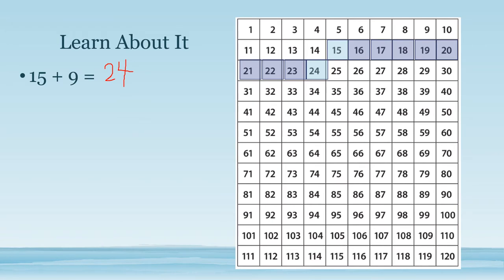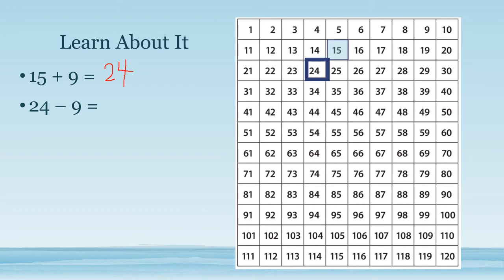Now let's try with subtraction. We will do 24 minus 9 by taking 9 ones away: 1, 2, 3, 4, 5, 6, 7, 8, and 9. Again, it's one space less than if we took away 10. So 24 minus 9 equals 15.